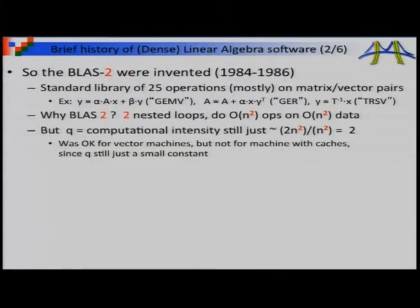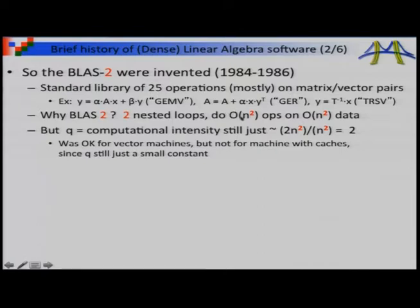A few years later, people moved from BLAS1 to BLAS2 — a larger library of 25 operations on matrix-vector pairs. The simplest is GEMV: multiply a dense matrix times a vector, with a scalar, and add another vector. There are also rank-one updates and triangular solves. BLAS2 has two nested loops doing O(n²) operations on O(n²) data. For matrix-vector multiply, that's 2n² operations on n² data, giving a computational intensity of two. It's an improvement, but still not great — as memory gets more expensive, two is not good enough.